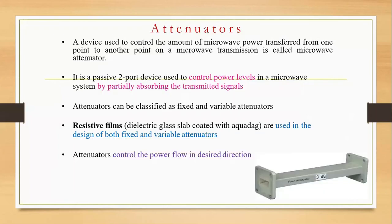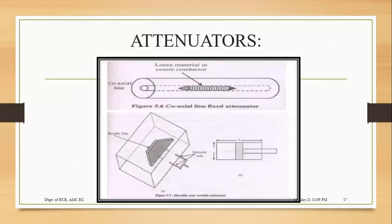This is a coaxial fixed attenuator where the waveguide type has a dielectric strip. Inside you have the coaxial line, then this lossy material — the dielectric strip — coated with the resistive film. It is placed at the center of the waveguide parallel to the maximum electric field. The electric field is taken horizontally, and the maximum electric field is parallel to this waveguide. Whatever current is induced on this resistive film due to the incident wave results in power dissipation, leading to attenuation of microwave energy.